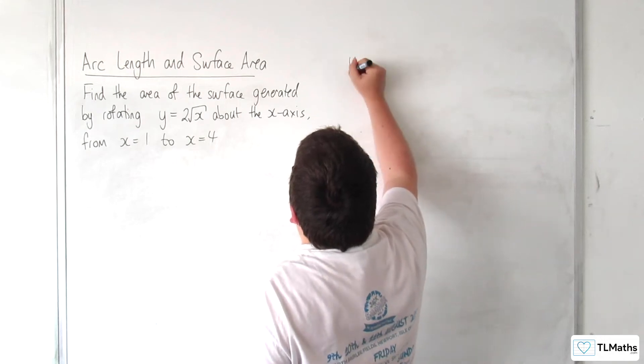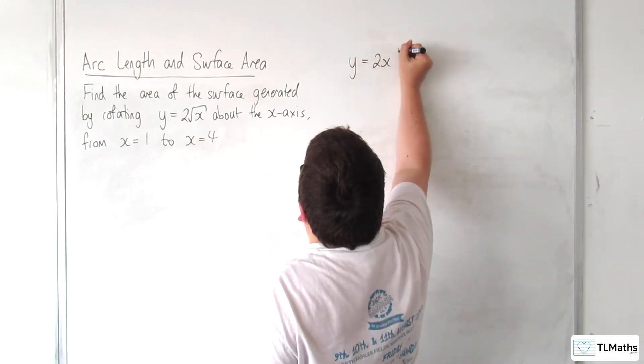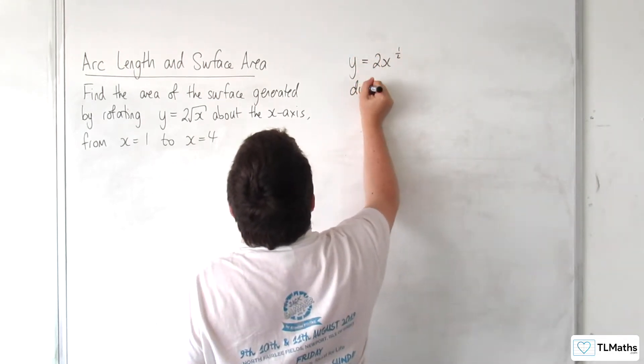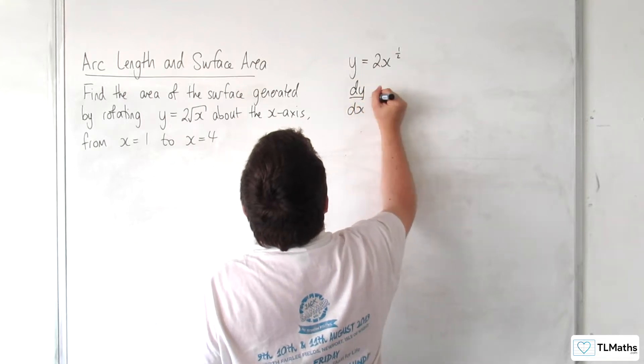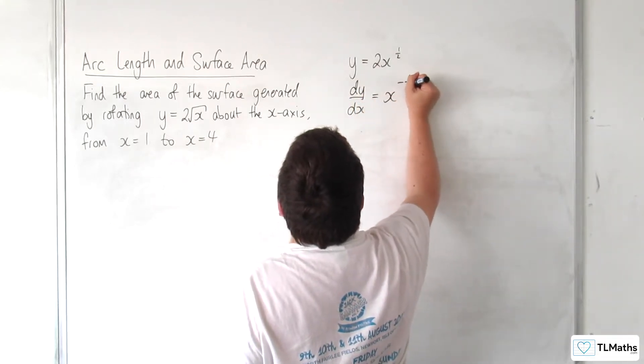So y equals 2x to the half. I'm going to need to differentiate that. dy by dx is equal 2x to the minus a half.